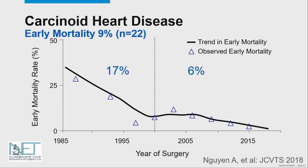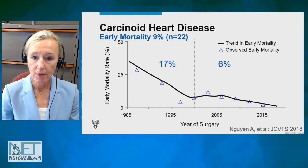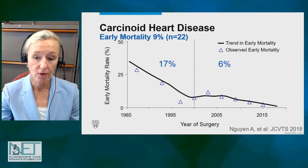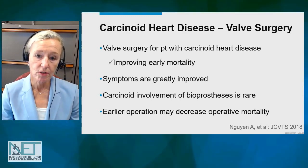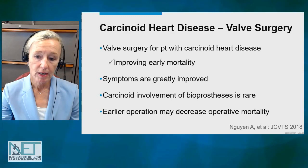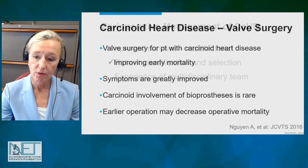We've gotten better over time. Through 2000, the chance of not surviving the operation or one month after surgery was pretty high at 17%. Fortunately, that has decreased. Since 2000, with better treatment before surgery, better selection of patients, earlier surgical intervention, and a comprehensive informed care team, surgical mortality has decreased to less than 10% and currently around 6%. From this data on 240 patients, these individuals had real improvement in symptoms after surgical intervention. Carcinoid involvement of the new valves, even biological valves that were placed, is very rare. And earlier operation — when patients are not severely ill — is very helpful and does decrease mortality.